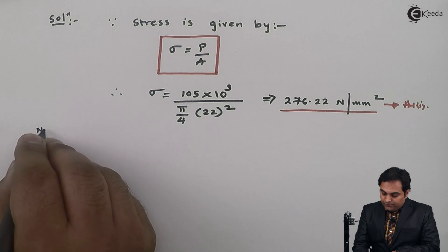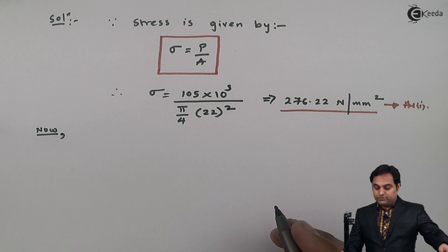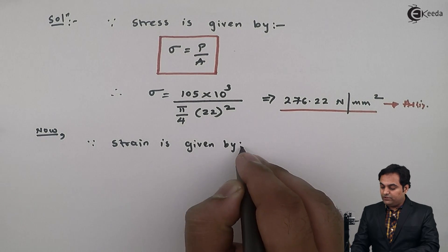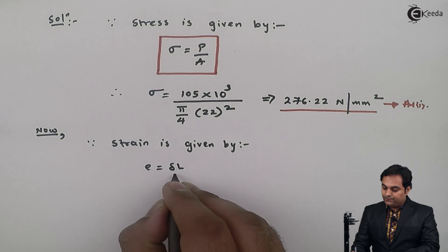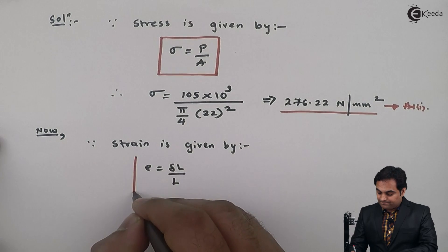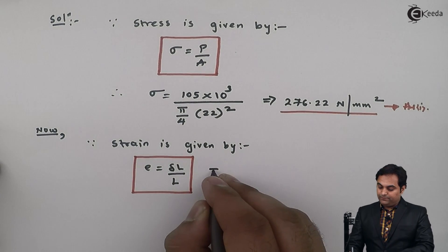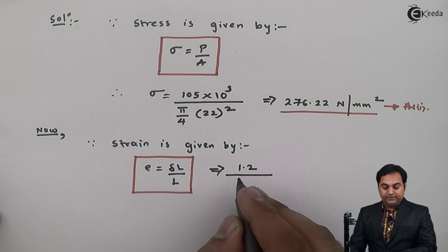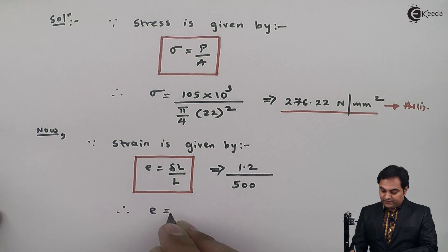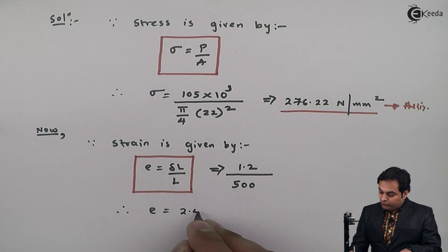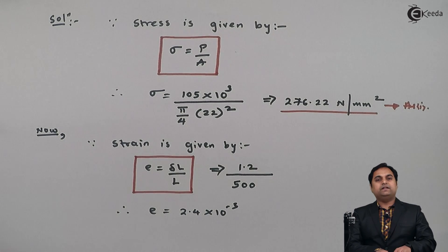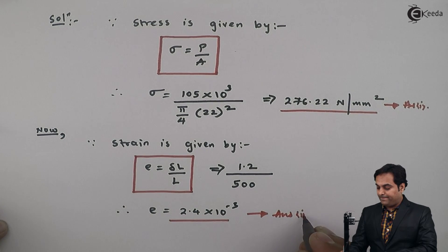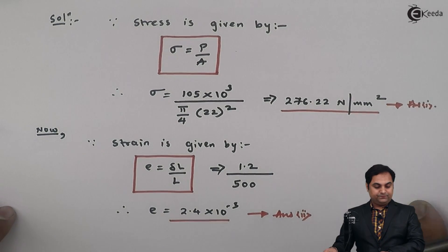Next, we calculate strain. Since strain is given by the formula: strain equals change in length upon original length. Putting in the values, the change in length is 1.2 mm and the original length is 500 mm. Strain comes out to be 2.4 into 10 raised to minus 3. Strain has no units — it is a dimensionless quantity.